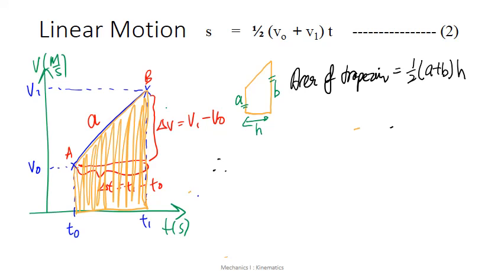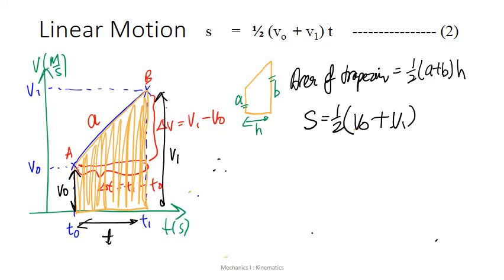Now applying this standard area of trapezium formula to our VT graph, we will see that s is equal to half times a, which is V0, plus b, which is V1, times the height, which is represented by T. So there you have it, our equation 2.